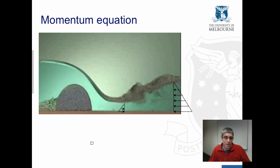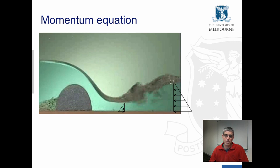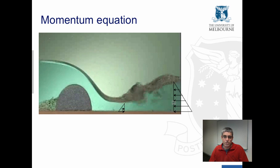Firstly, we need the momentum equation. We have a force applied by hydrostatic pressure at the upstream end of the hydraulic jump under critical flow conditions, and at the downstream end of the hydraulic jump. The pressure force applied is much less upstream than it is downstream, so there's a net force in the upstream direction, which causes deceleration of the flow, giving us reduced velocity downstream and increased water depth.